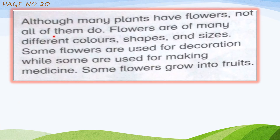Let's start reading. Although many plants have flowers, not all of them do. We are reading the parts of plants. The parts include flowers, roots, stem, and leaves. We have studied roots previously; now we are reading about flowers.